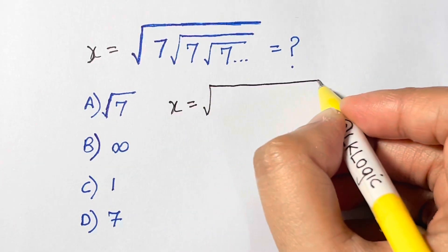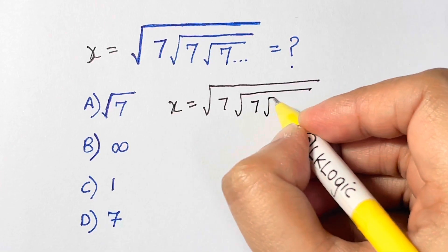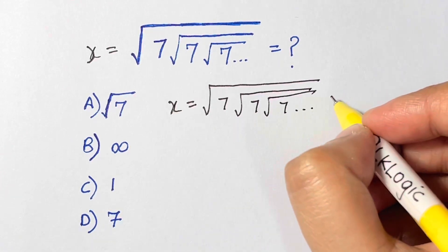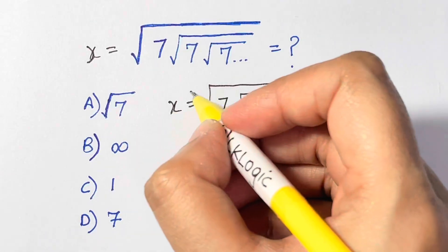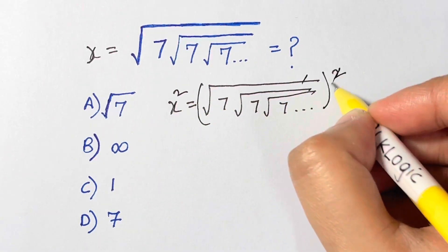x is equal to under root of 7, under root of 7, under root of 7, and goes on to infinity. Now we're going to square both sides, so squaring on both sides, this root and square gets cancelled.